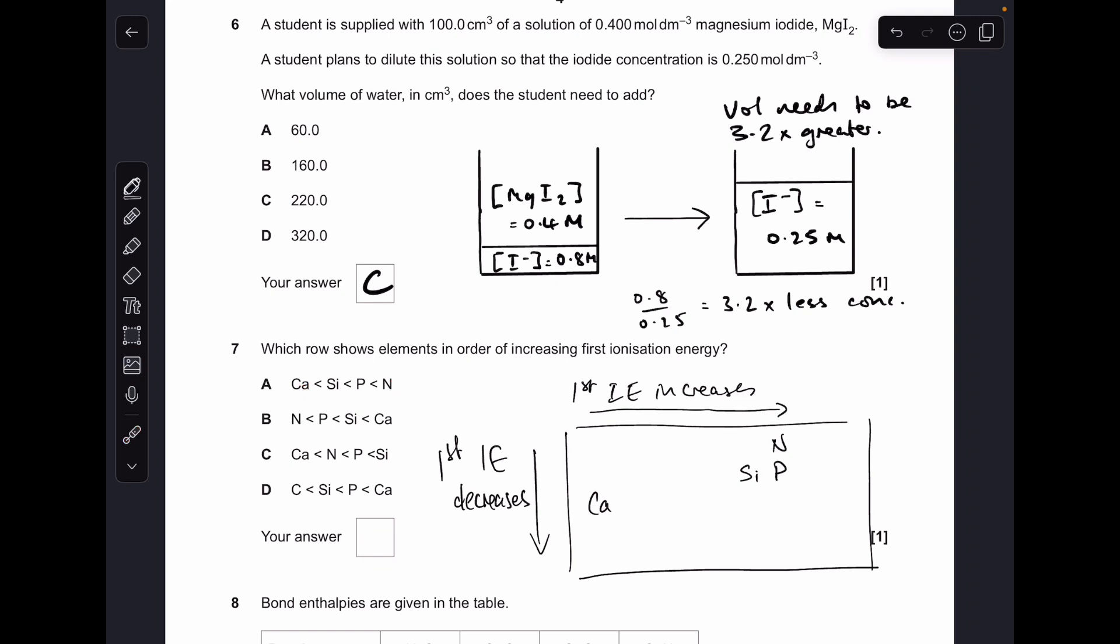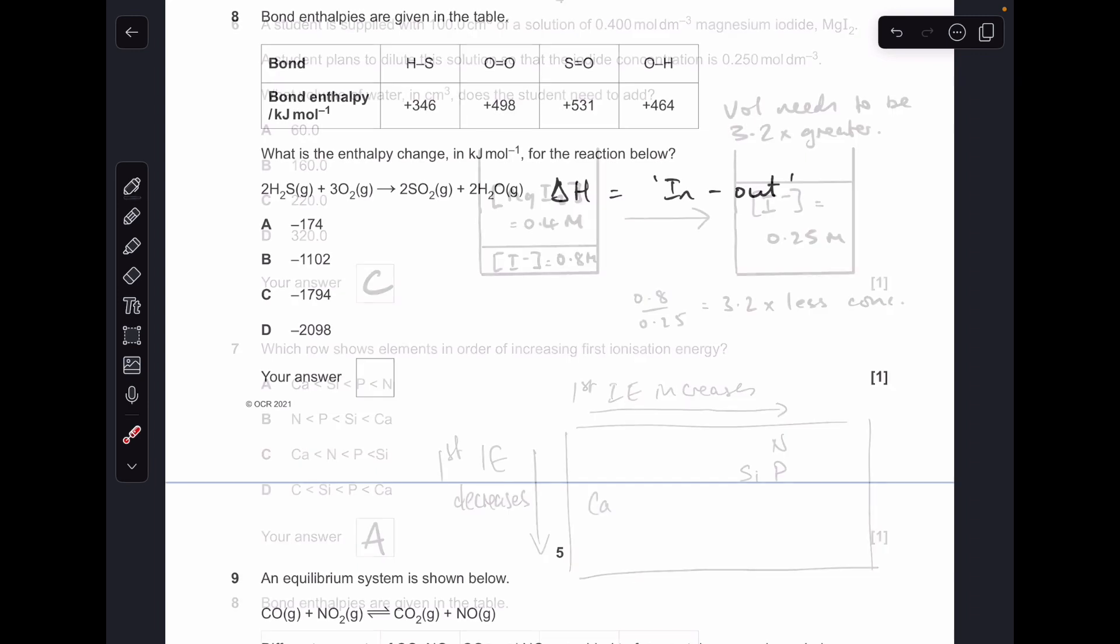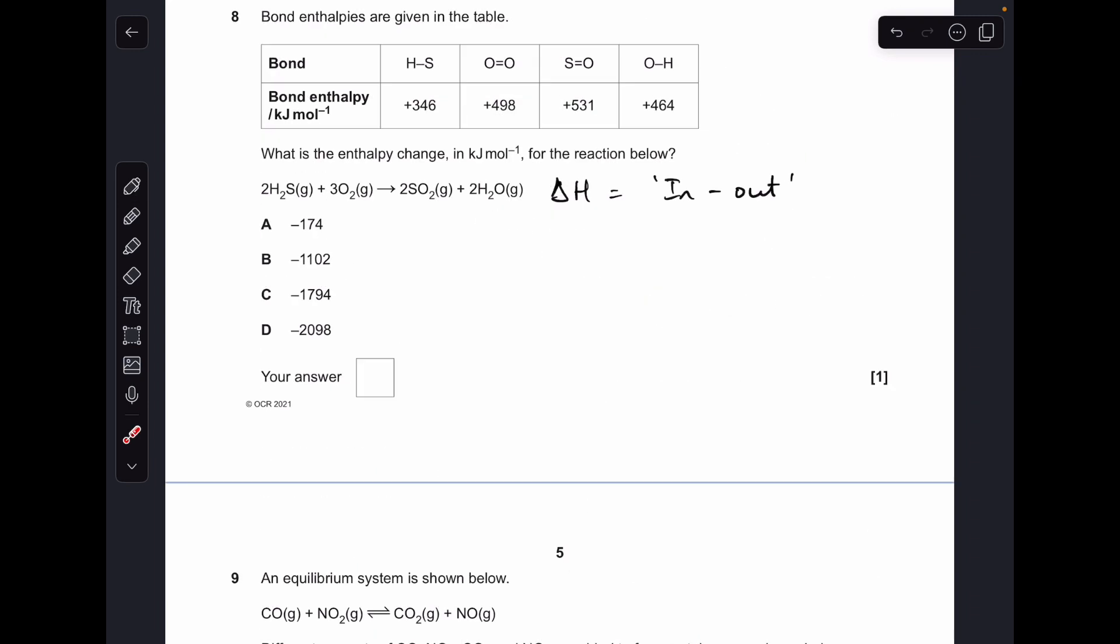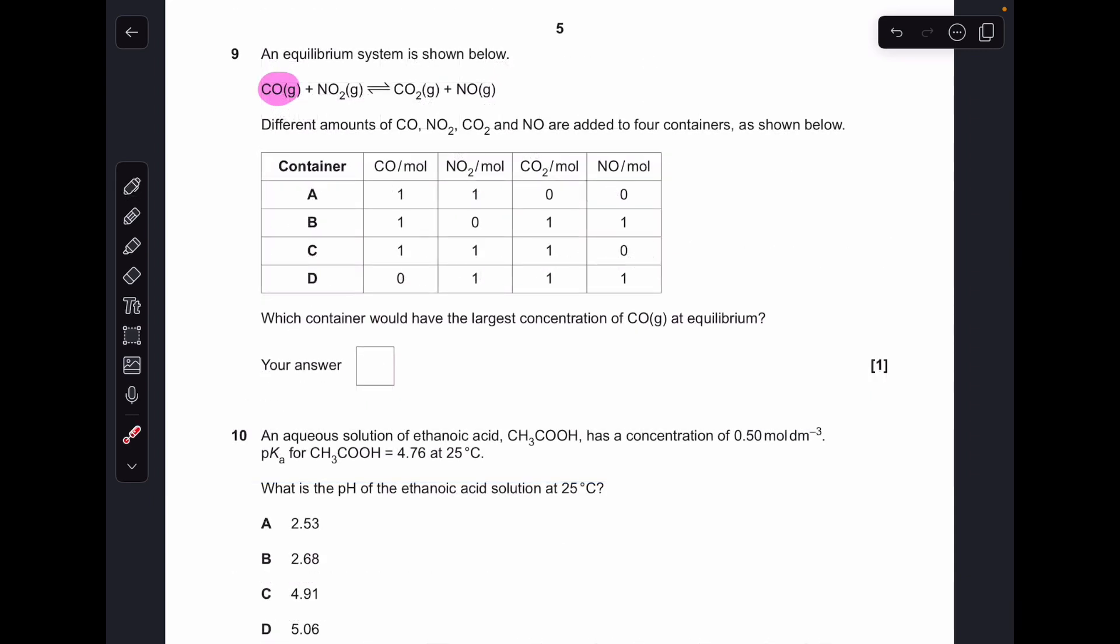Moving on to number eight. So delta H for a reaction using bond enthalpies, I call it in minus out. So it's the sum of the energy that has to go in to break the bonds in the reactants, so these things here, and then you subtract from that the energy released when the bonds form in the product. So that's my out energy. So there's all the numbers there, and when you put that in your calculator you get minus 1102. So it was B.